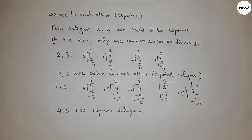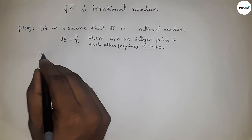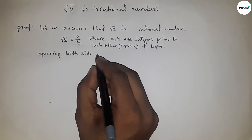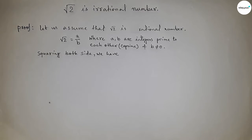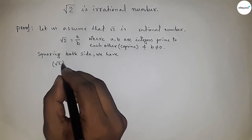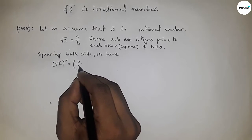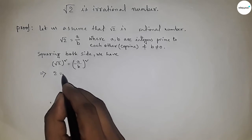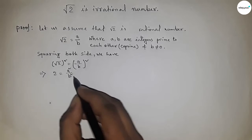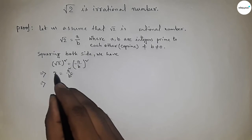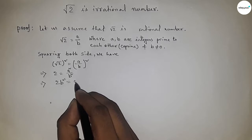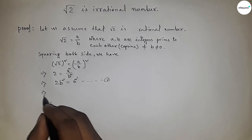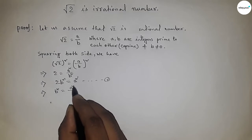Now squaring both sides of root 2 equal to a by b, we get root 2 squared equal to a squared by b squared. Since root 2 squared equals 2, we have 2b squared equal to a squared. This is equation one.